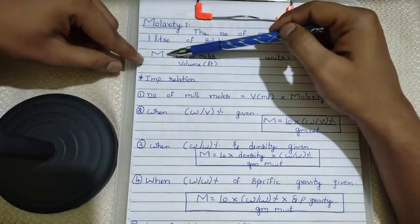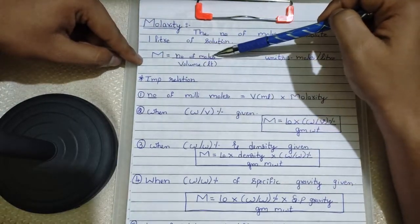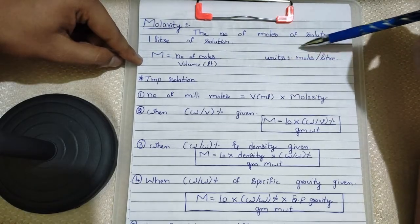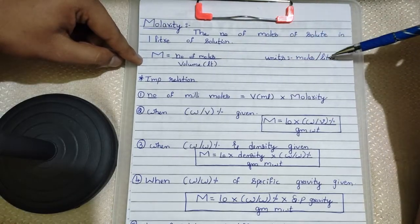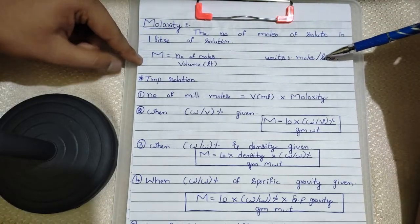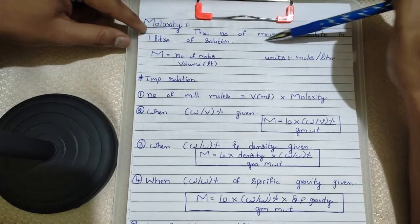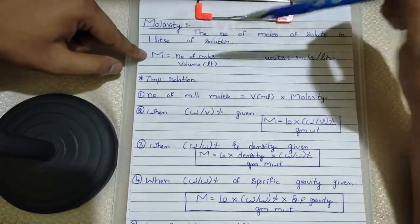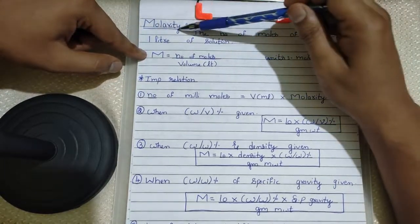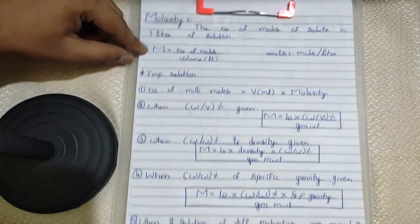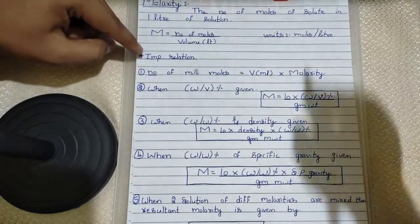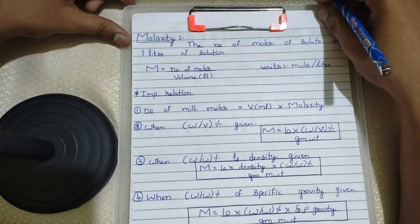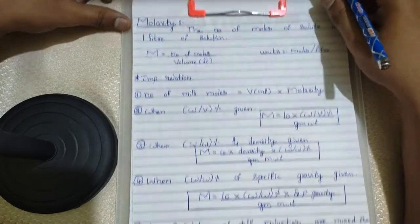The formula for molarity is number of moles divided by volume in liters, and the unit for molarity is moles per liter. However many moles you dissolve in one liter of solution, that concentration we call molarity. Now let's see some important relations and formulas to calculate molarity-based questions.